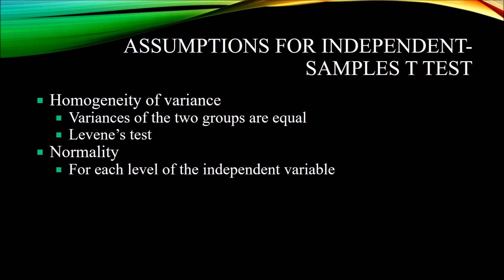Now let's take a look at the assumptions for the independent samples t-test. When we conduct inferential statistics, we have to make sure that the data meet the assumptions for the particular statistic we are conducting. For the independent samples t-test, we have two assumptions: homogeneity of variance and normality. Homogeneity of variance means that the variances of the two groups are equal. For example, with gender as our dichotomous variable and depression as the construct we're measuring, the variance in the depression scores for males would have to be equal to the variance in the depression scores for females.